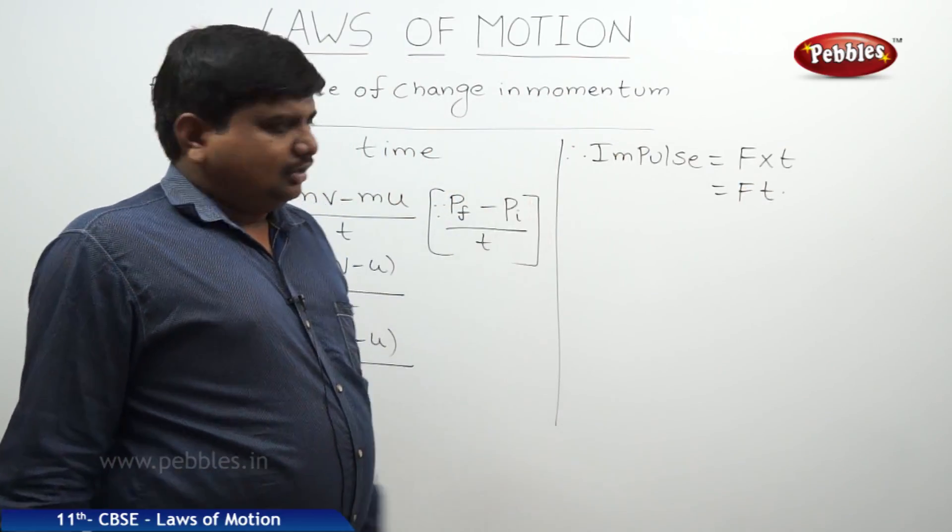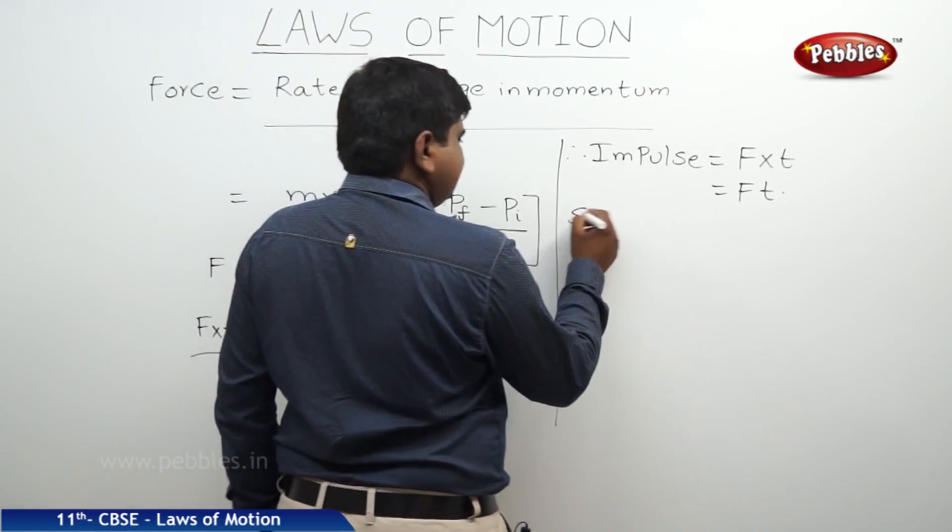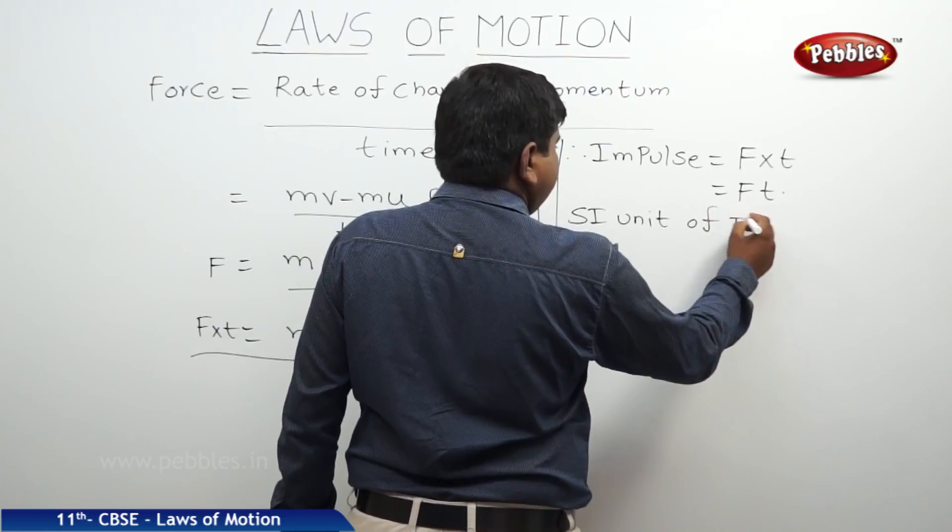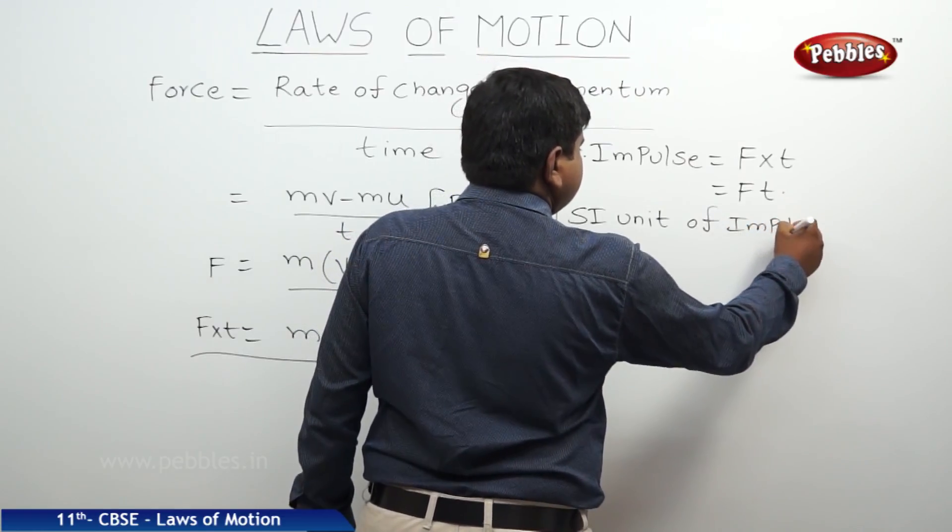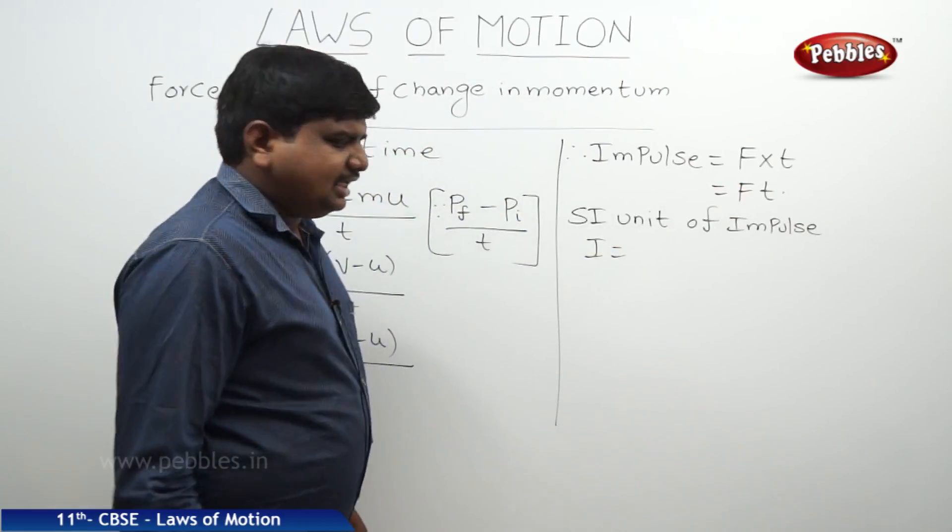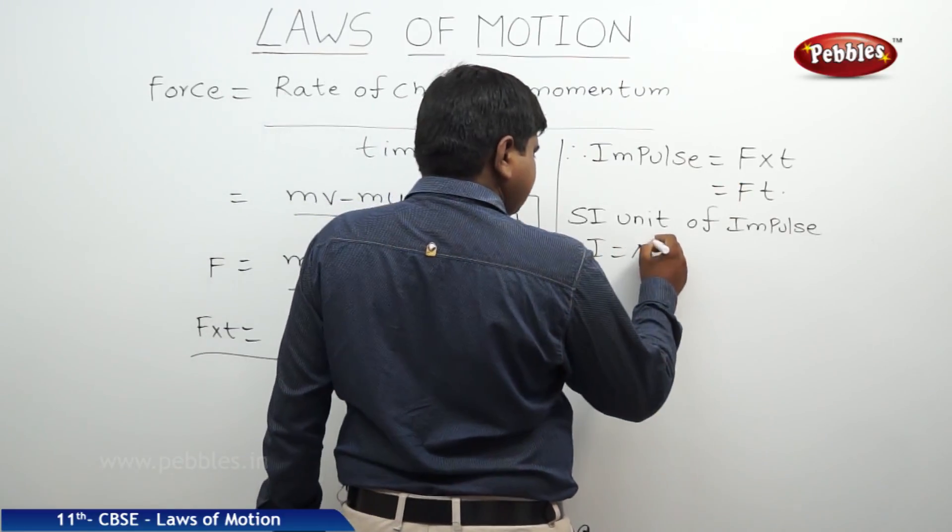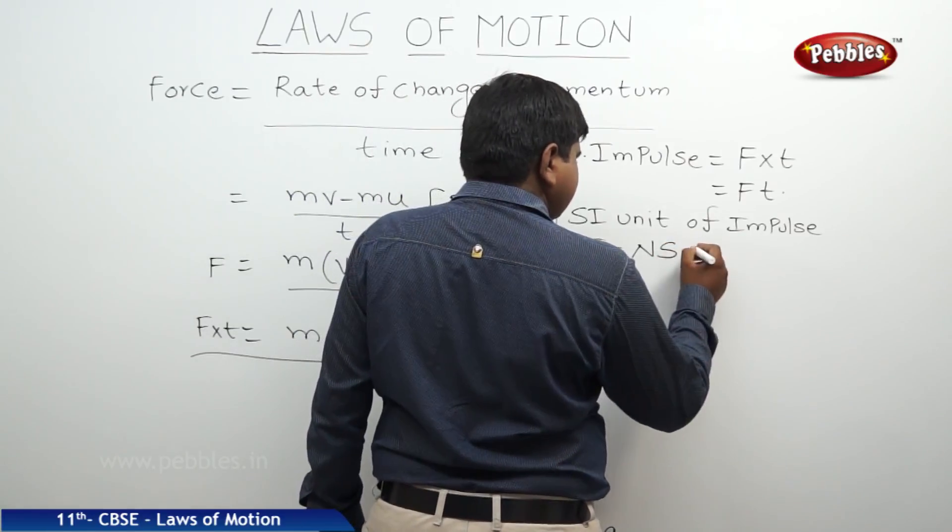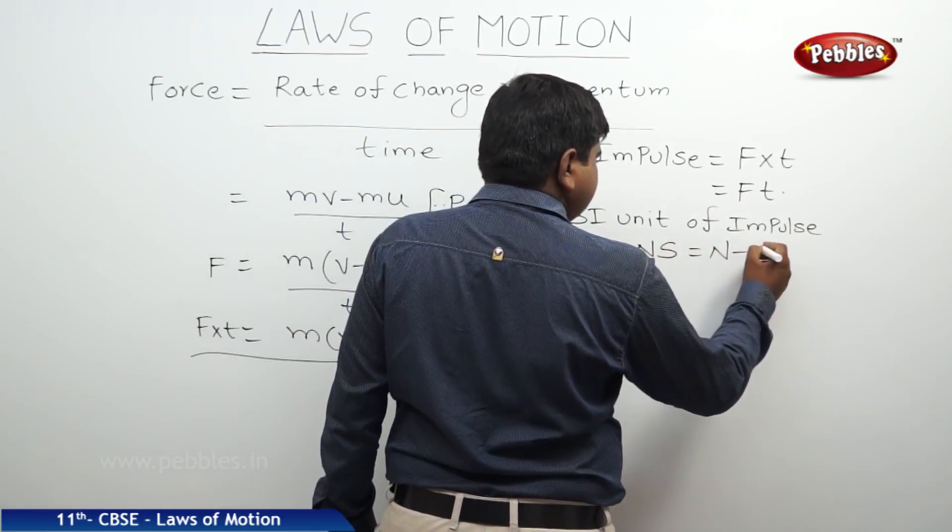After deriving the formula, what is its SI unit of impulse? I is equal to... the SI unit of force is Newton, SI unit of time is second. So it is called as Newton second.